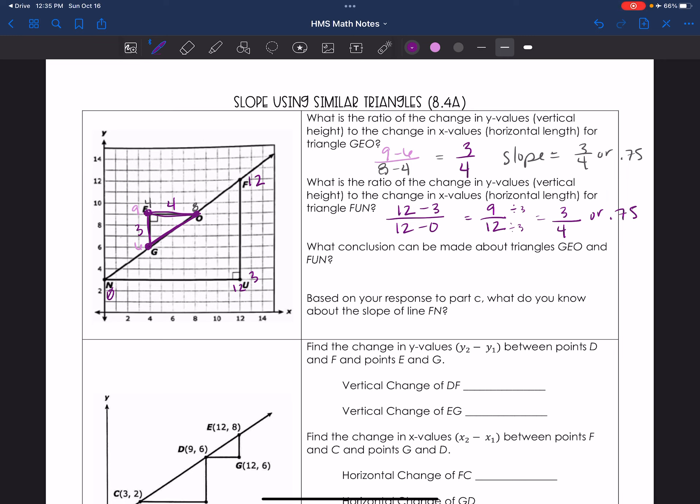So, what conclusion can be made about the triangles GEO and FUN is they are similar triangles. Because they have the same ratio, the same slope. Based on your response to part C, what do you know? So, here's part A, B, C. Based on your response to part C, what do you know about the slope of line FN? So, that's the actual linear function. The slope is the same for both triangles. I'm going to say equivalent because that's a fancier term for same. Slope is equivalent for both triangles, which is 3 fourths or 0.75.